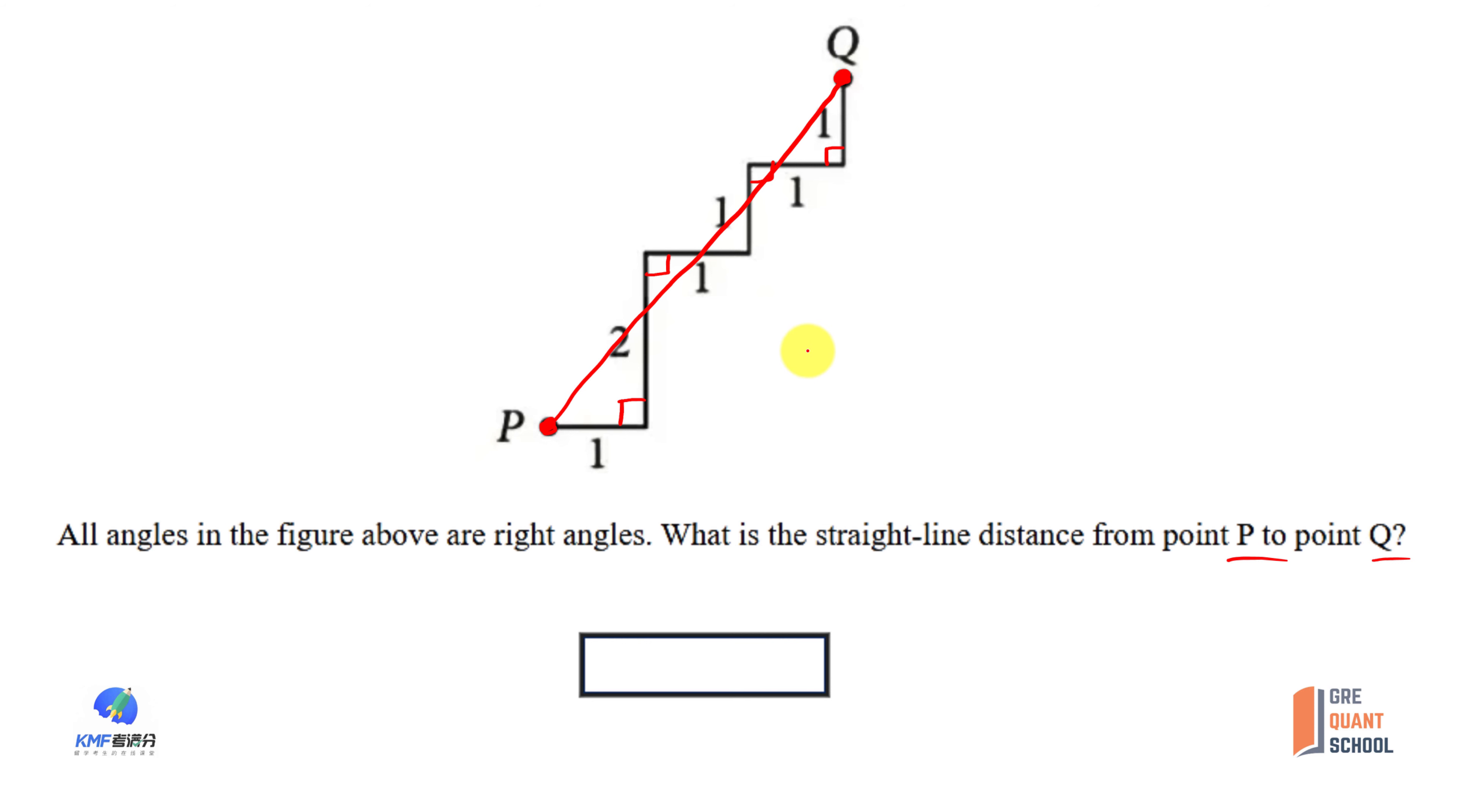OK, P point, Q point. We are going to be done by this. This is 1, this is 1, this is 1, this is 1, this is 1.